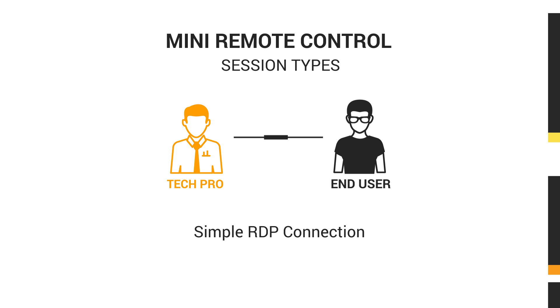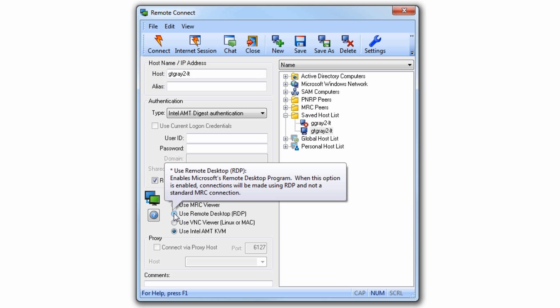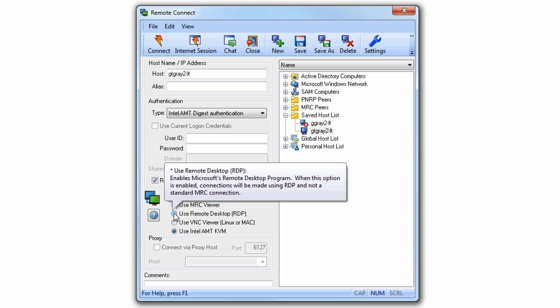The fifth connection type is a simple RDP connection. However, rather than launching RDP on its own, you can simply launch it directly from the MRC console and take advantage of your host list.